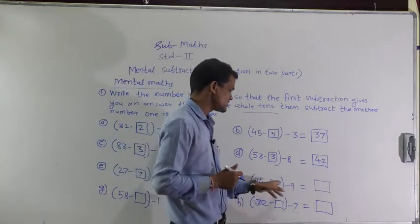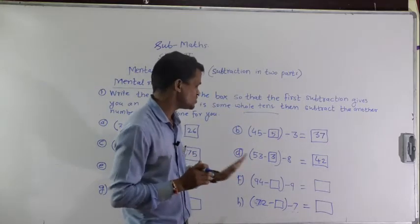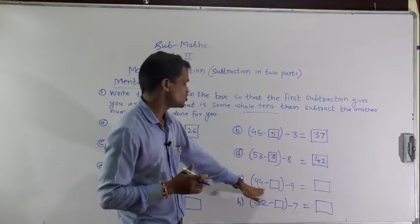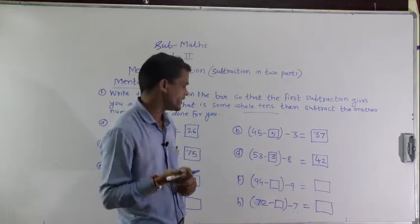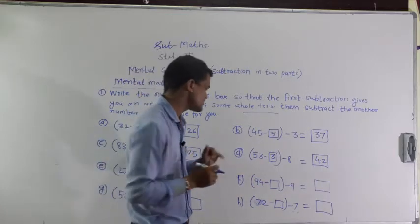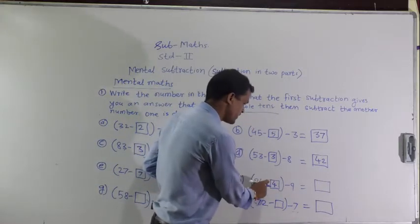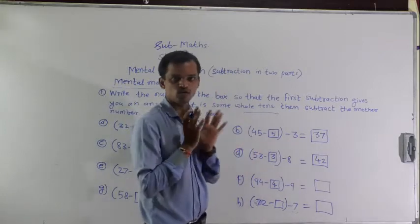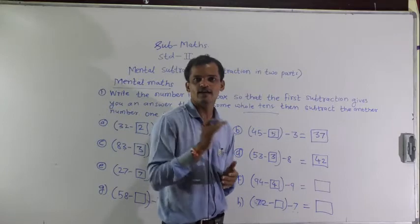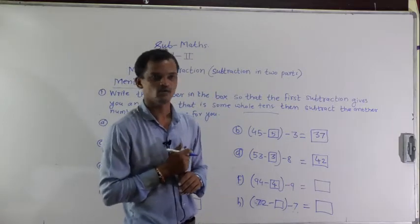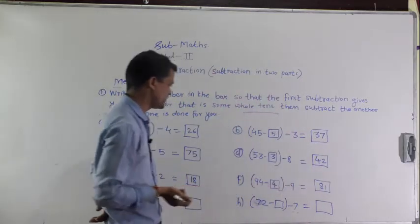Next: 94 minus blank minus 9. Which number should be subtracted from 94 so you get 90? That is 4. So 94 minus 4 equals 90. Next step: 90 minus 9 equals 81. Just do the calculation in your mind. Next: 58 minus blank minus 1. Here 58 minus 8 — if we subtract 8 from 58, we will get the whole ten, that is 50.